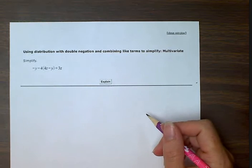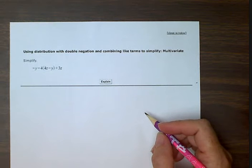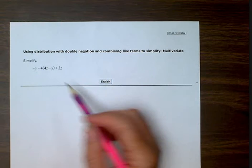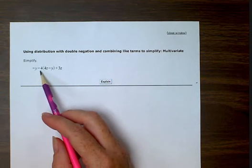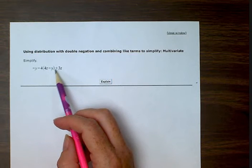Using distribution with double negation and combining like terms to simplify multivariate. Simplify: minus y, minus 4, multiplied by the parentheses 4z minus y, and the parentheses plus 3z.